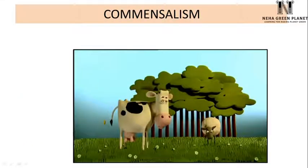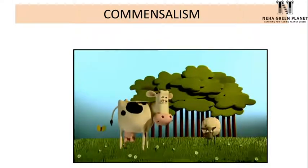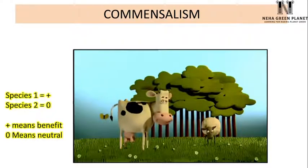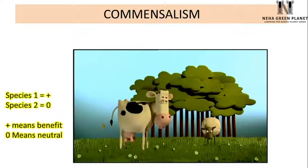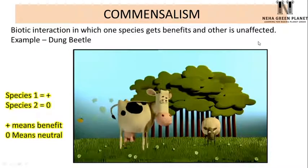Now let's study commensalism, using the example of a cow and a dung beetle. The dung beetle is able to derive its nutrition from dung, while the cow remains unaffected. Species 1 — the dung beetle — gets a positive benefit in terms of nutrition, while species 2 — the cow — is unaffected. This kind of relationship is commensalism: one species gets benefit and the other is unaffected.